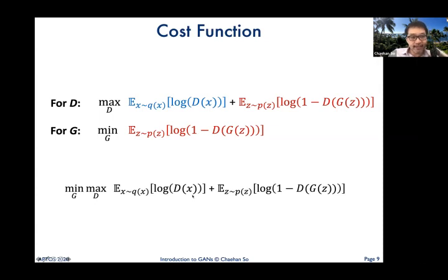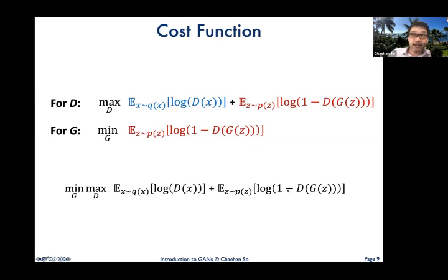This is not a static equation but a dynamic one, with many trials, errors, and iterations. From game theory, we know that the generator loss and the discriminator loss will reach an equilibrium — the Nash equilibrium — where both the generator and discriminator loss probabilities are equal, around 0.5.